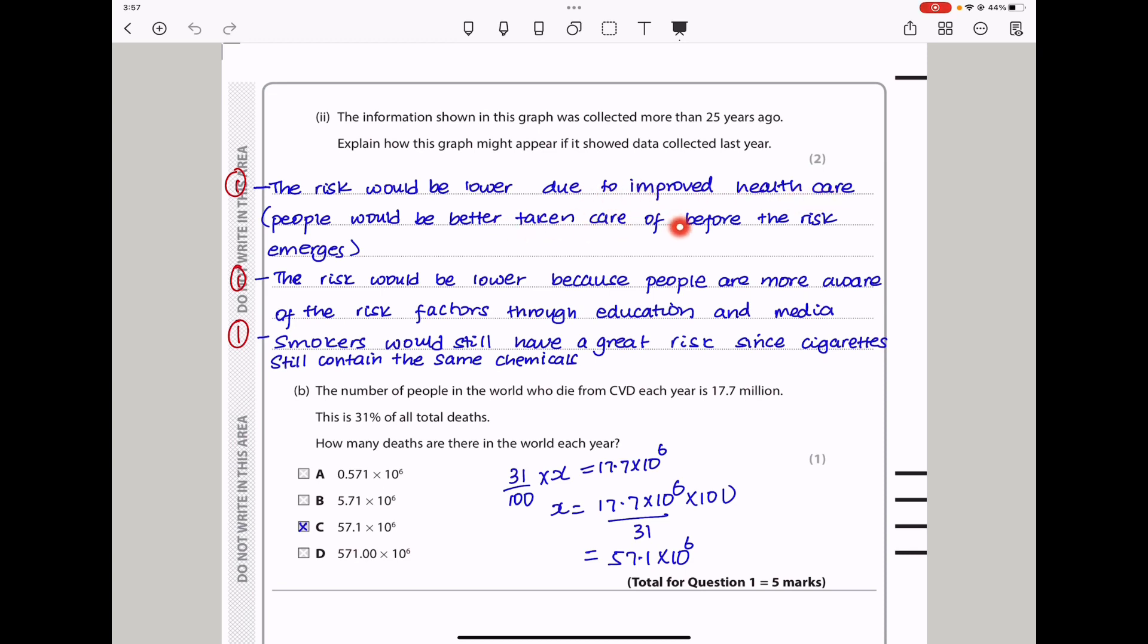So here I said the risk would be lower due to improved health care. People would be better taken care of before the risk emerges. And the risk would be lower because people are more aware of the risk factors through education as well as the media. However, smokers would have the same risk since cigarettes still contain the same chemicals.